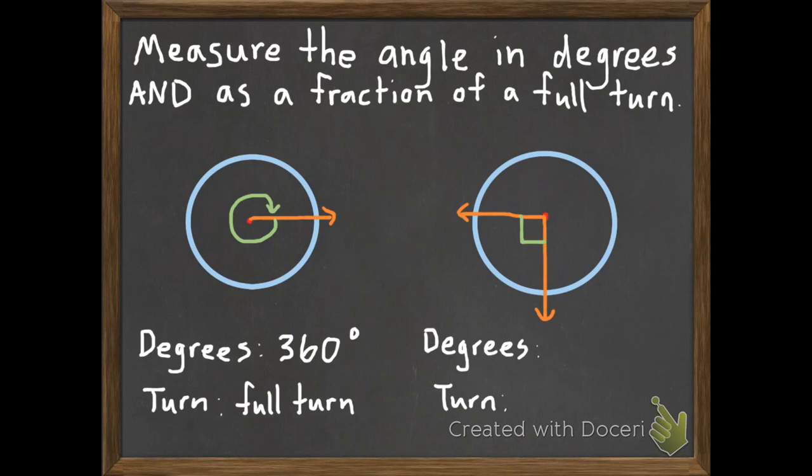Okay, for our first one, that goes all the way around. So a circle has 360 degrees and this goes around the whole circle. And it's a full turn.